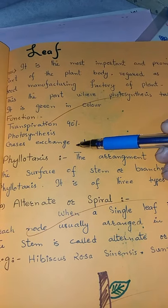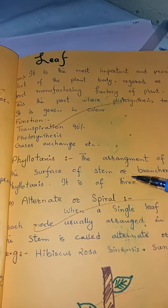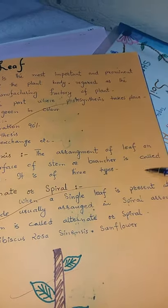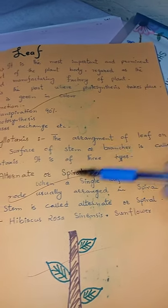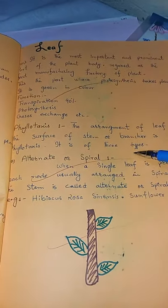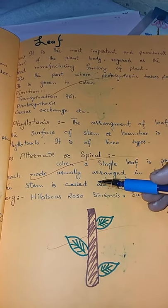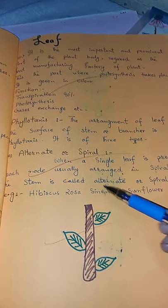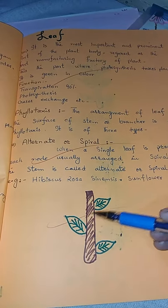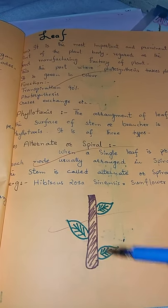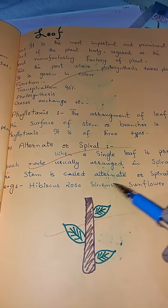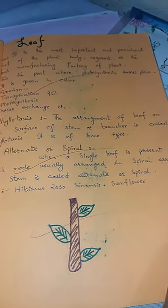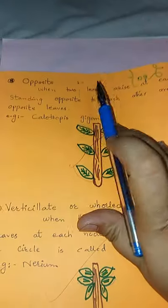Phyllotaxis is the arrangement of leaves on the surface of a stem. Phyllotaxis types include alternate and spiral — at each node only one leaf arises, alternate or spiral. An example of this phyllotaxis is Hibiscus rosa-sinensis, also called the sand flower.